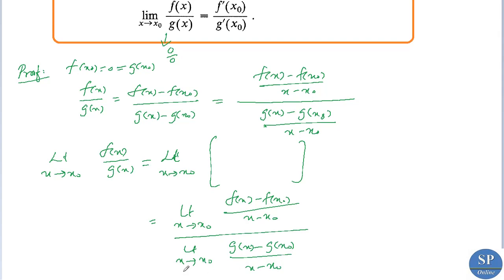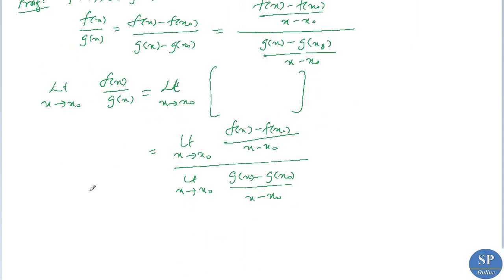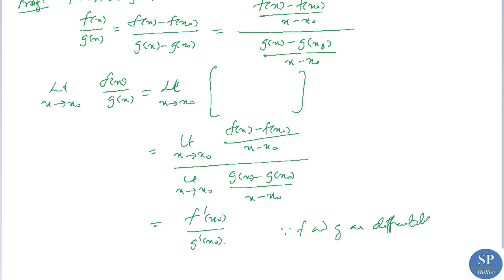By the definition of differentiability, the first expression is f'(x₀) and the second is g'(x₀), since f and g are differentiable. Therefore, the derivative exists, and we obtain: limit as x tends to x₀ of f(x)/g(x) = f'(x₀)/g'(x₀).